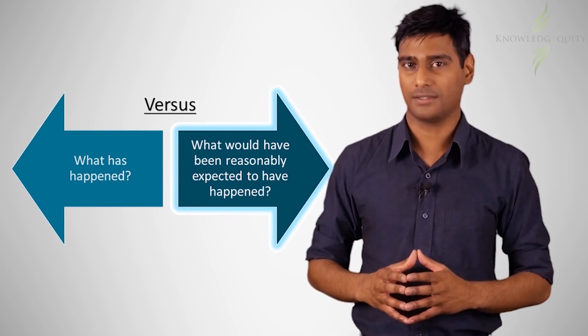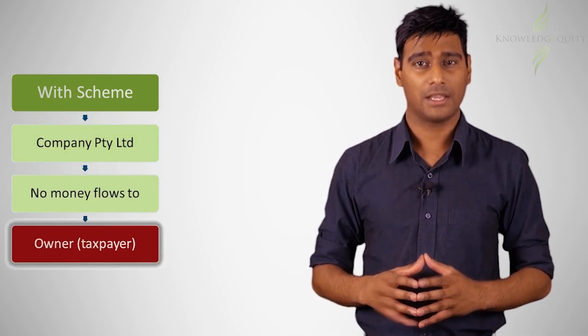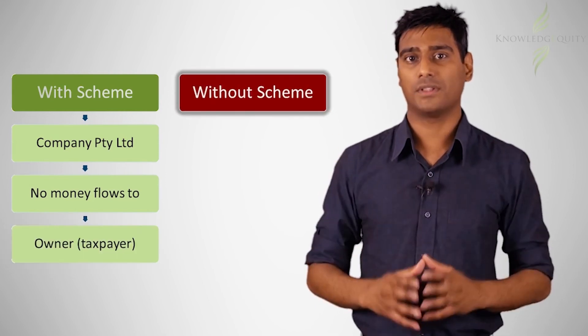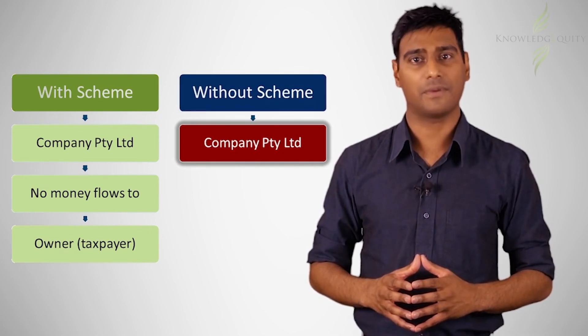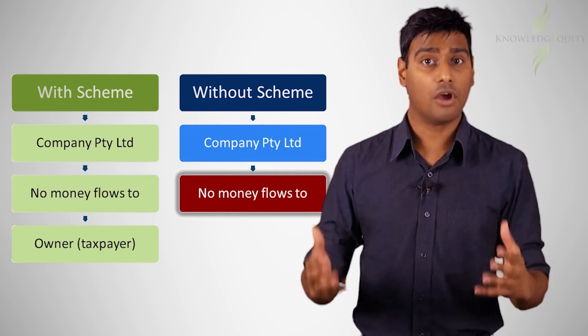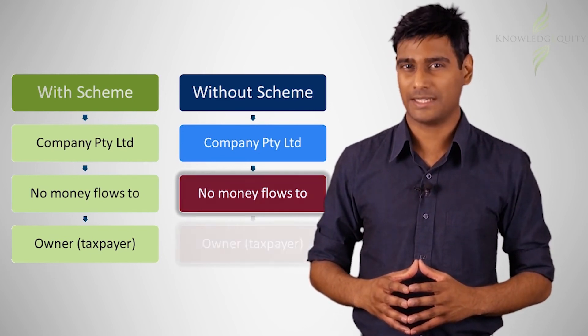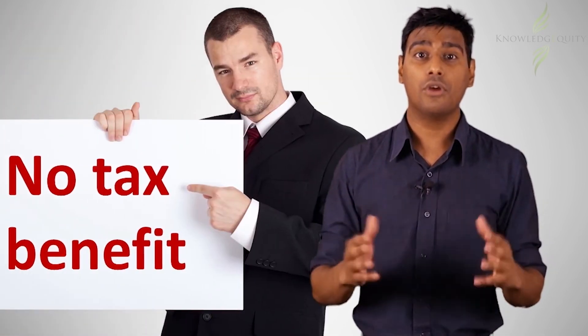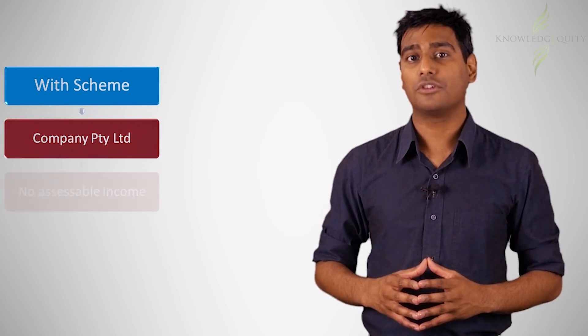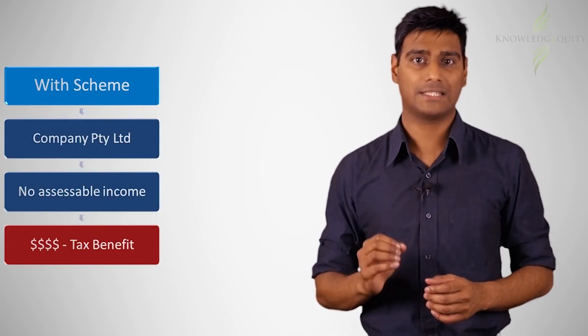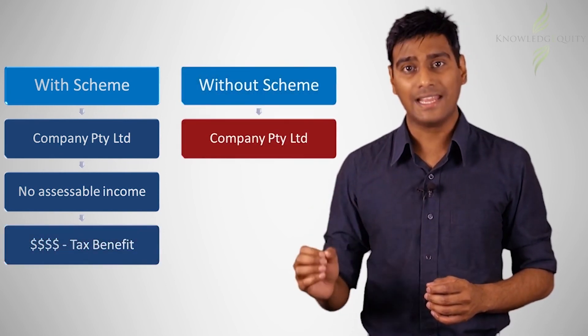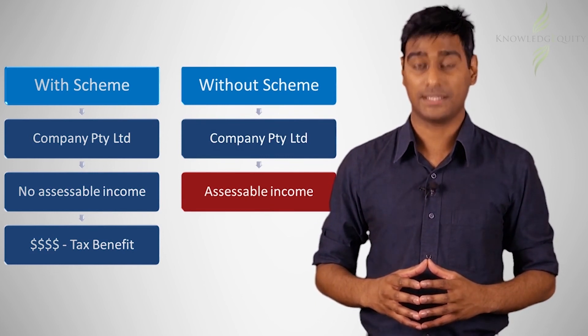Remember, the requirement of showing that the taxpayer has a tax benefit compares what happened with the scheme with what would reasonably be expected to have happened without the scheme. Here it could be argued that with the scheme, the taxpayer has not earned any assessable income from the company. However, it could also be argued that but for the scheme, the taxpayer would not have earned an assessable income from the company. Only the company would have, and the company would not have necessarily distributed its income to the taxpayer. This means that the individual taxpayer has not had any tax benefit. However, had the tax office assessed the company under Part 4a, it would have been able to show a tax benefit because the company has lower assessable income compared to what would have been reasonably likely to have happened had it not entered the scheme to eliminate its assessable income.